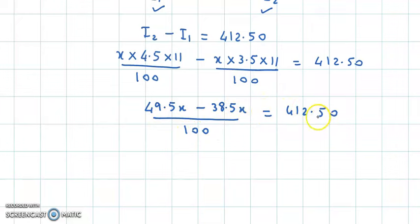Multiplying both sides by 100 and subtracting, we get 49.5x - 38.5x = 11x. So 11x = 41250. Dividing both sides by 11: x = 41250/11 = 3750.